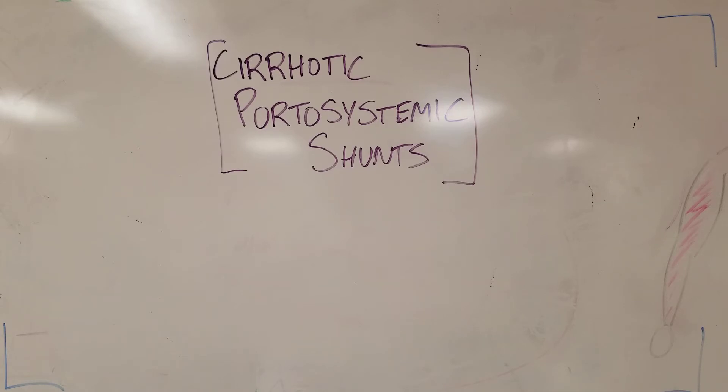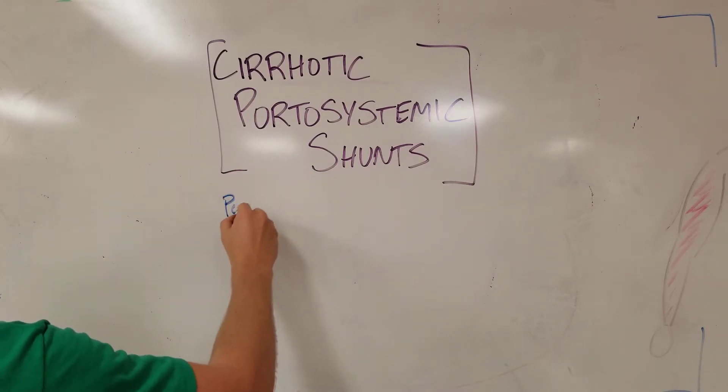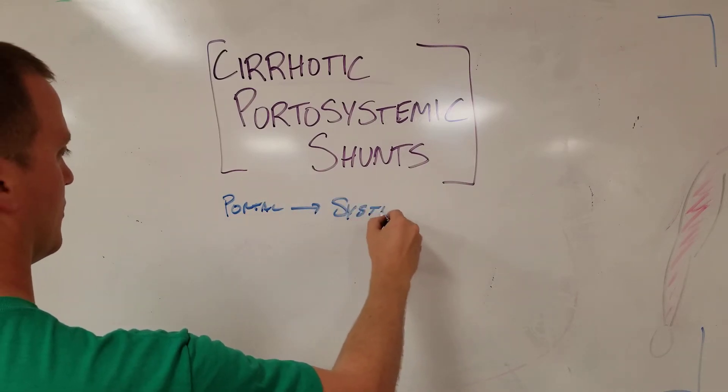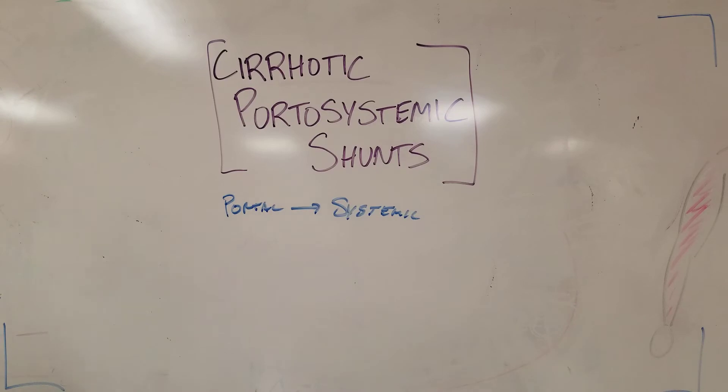These can be very clinically important and they're obviously heavily tested. A portosystemic shunt is an inappropriate connection between the portal system and the systemic system that might be there naturally but then gets exploited in cirrhosis due to high venous inflow pressures to your liver